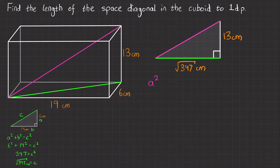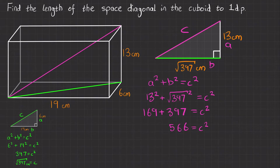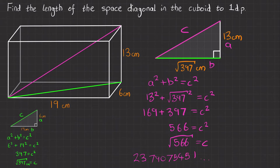Now we can work out this pink length. Write Pythagoras' theorem: a squared plus b squared equals c squared. Label the sides — c is the hypotenuse, and I'll call the others a and b. Substituting: 13 squared plus root 397 squared equals c squared. Expanding: 169 plus 397 equals c squared. Adding them together gives 566 equals c squared. Square rooting both sides: root 566 equals c. Entering that into the calculator gives 23.79..., so our final answer is c equals 23.8 centimetres to one decimal place.